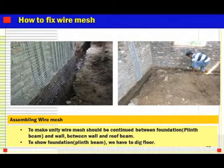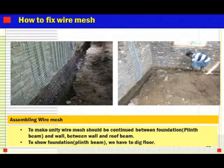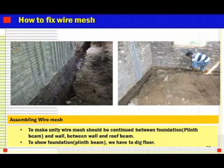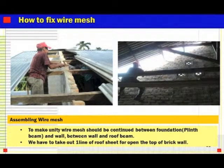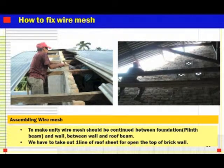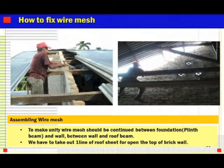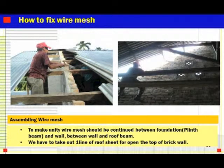To achieve continuity from the prince beam slope to the wall, we have to expose the foundation prince beam — meaning we have to dig the floor, as shown in the right side photo. On the top of the wall, we have to cover it with wire mesh. To open the top of the brick wall, we take out one line of roof tiles, then cover with wire mesh — as shown in the photo.